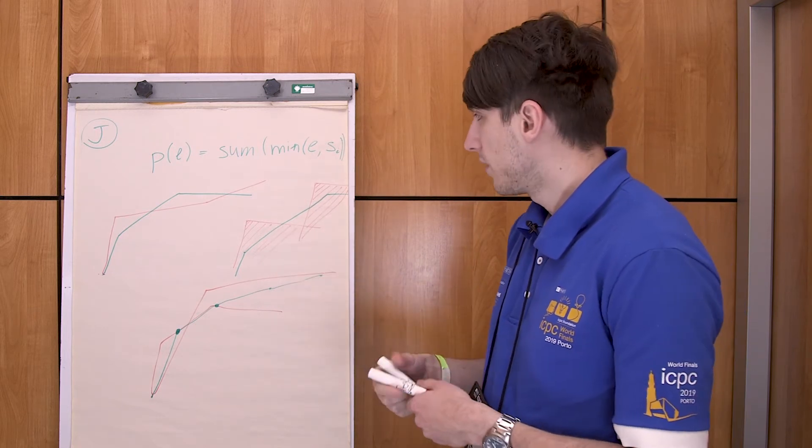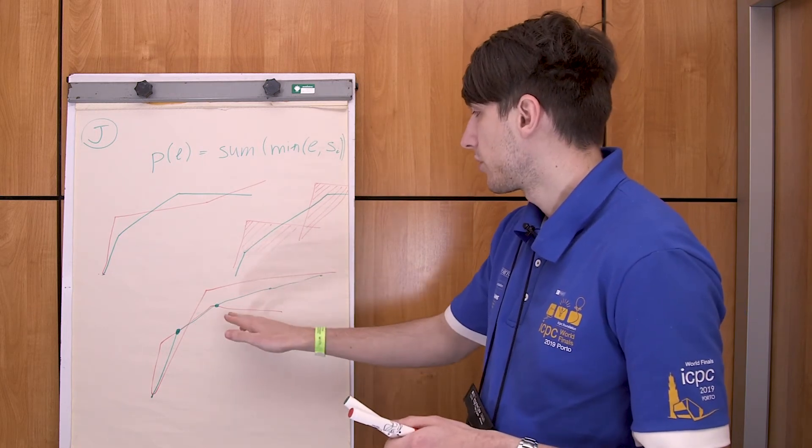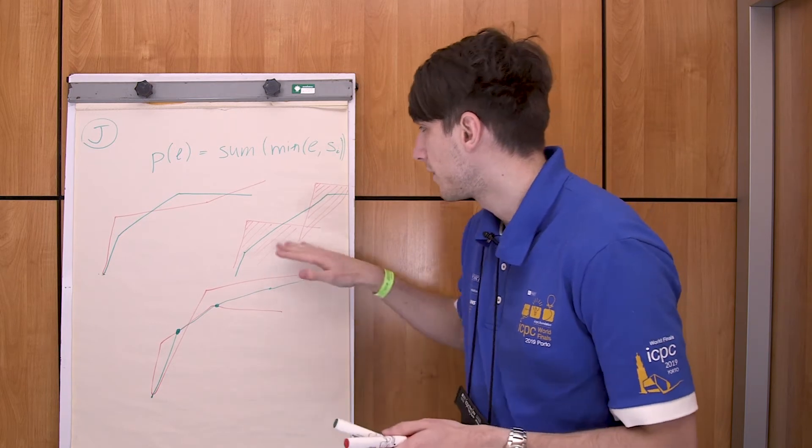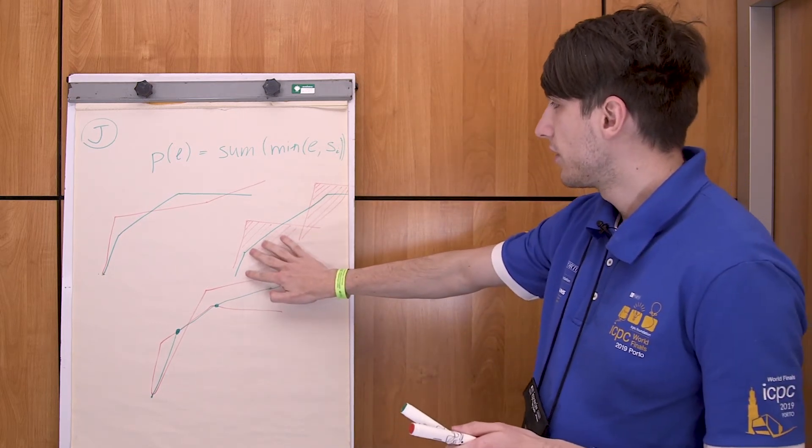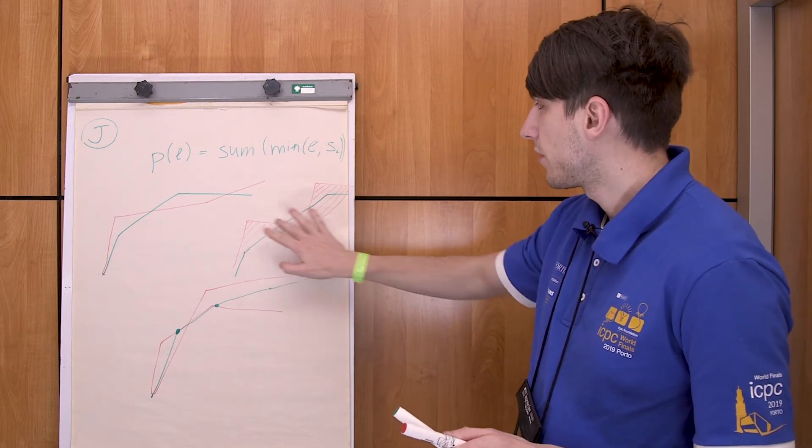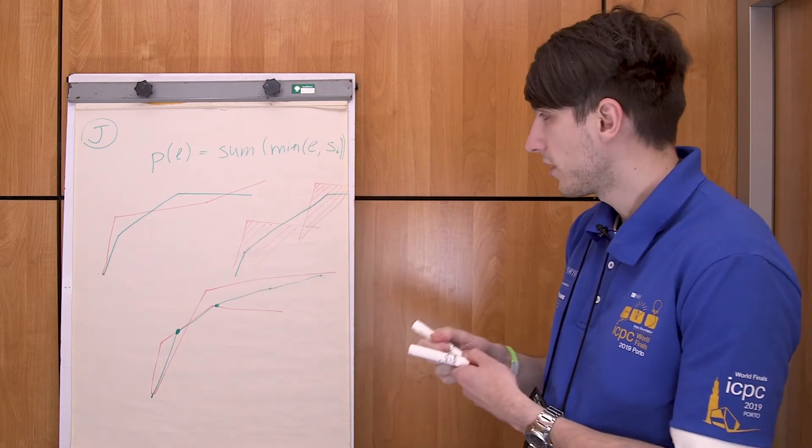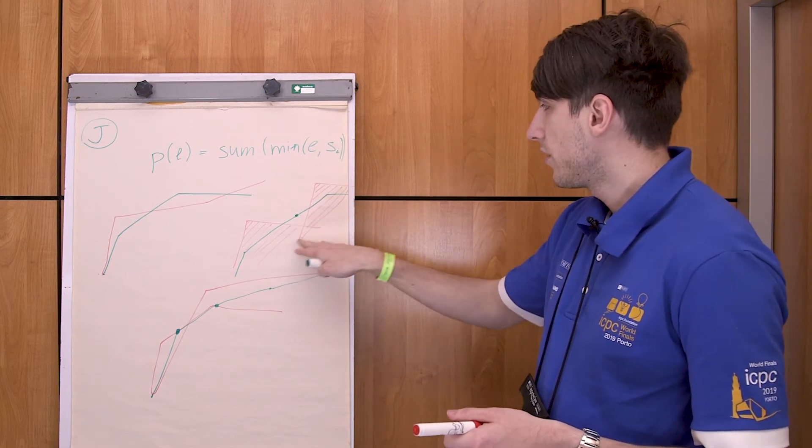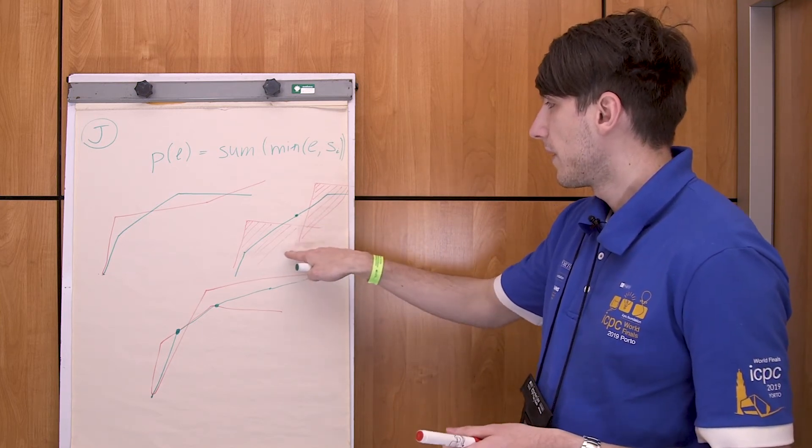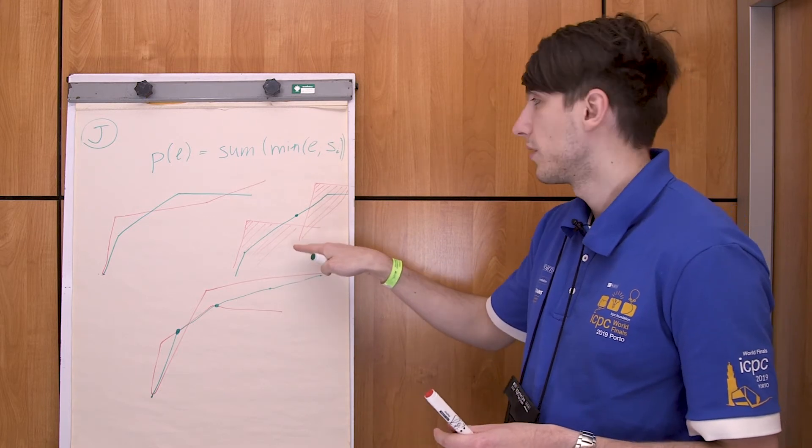So if you see in this case, the green function can be covered with several other functions so that it has the best parameter somewhere here. But clearly, there are no vertices of any linear function at this point.